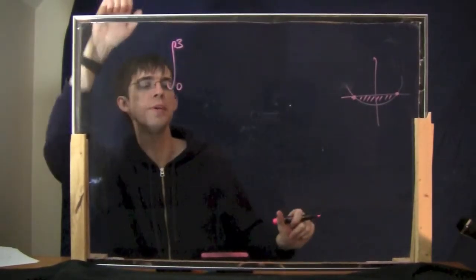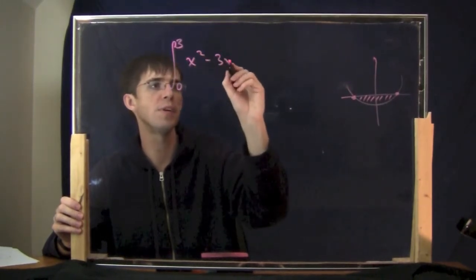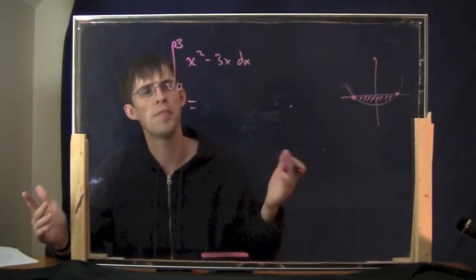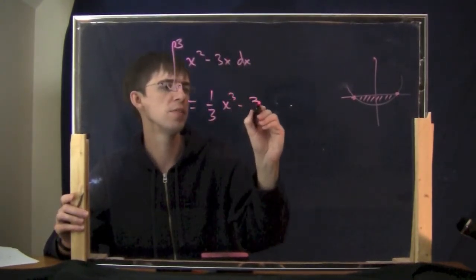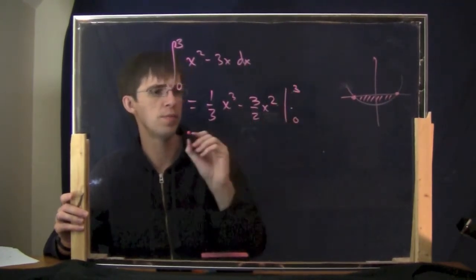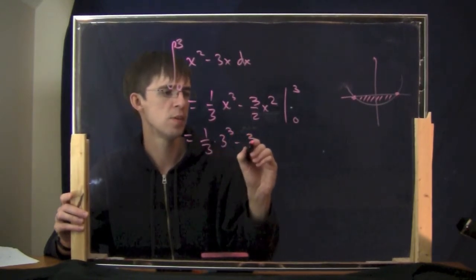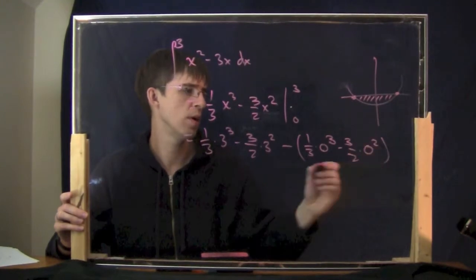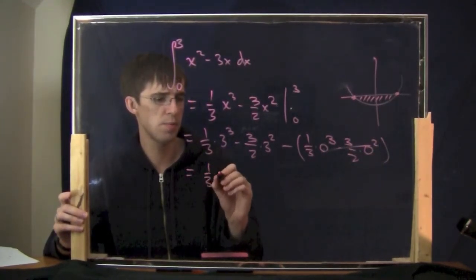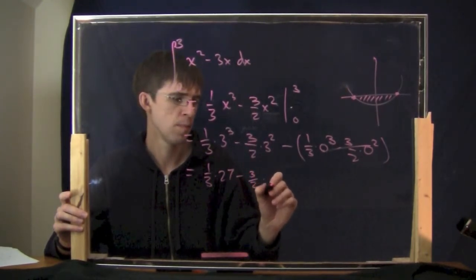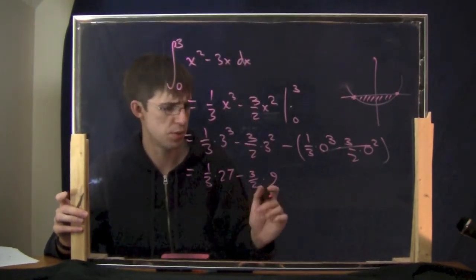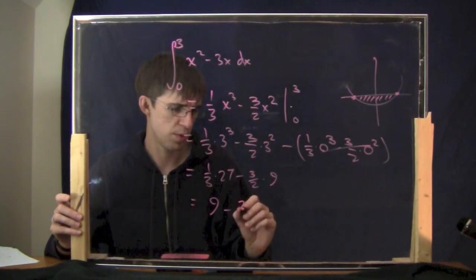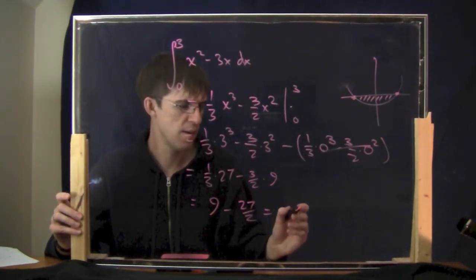Now integrate from 0 to 3 of x² - 3x dx. The anti-derivative is (1/3)x³ - (3/2)x². Plugging in 3 and 0: (1/3)(27) - (3/2)(9) minus 0 = 9 - 27/2 = 18/2 - 27/2 = -9/2.